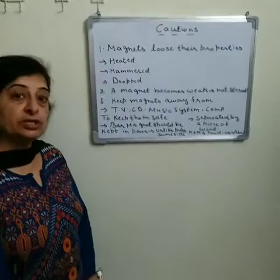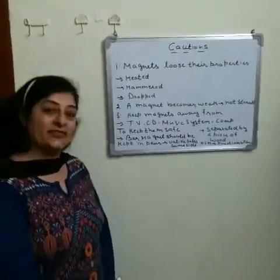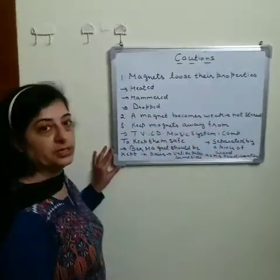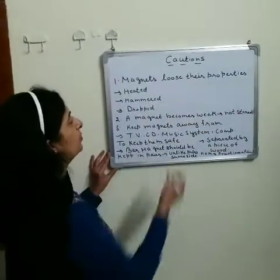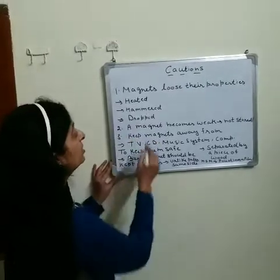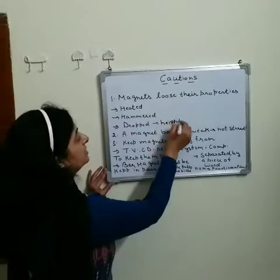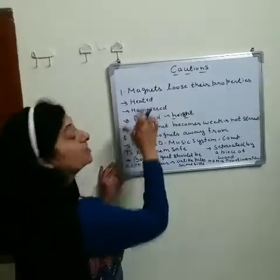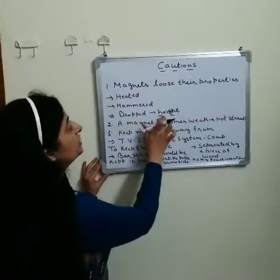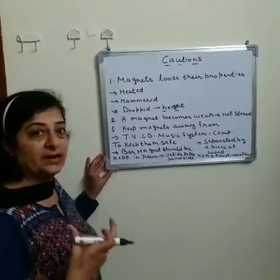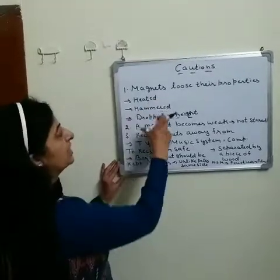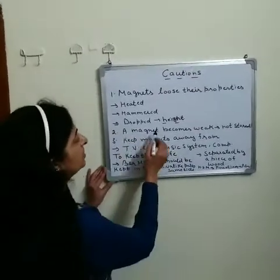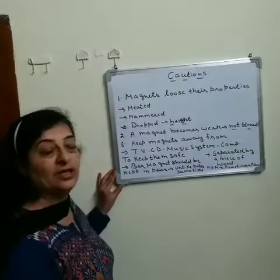Now we will discuss precautions to keep our magnets safe. First, let us find out the reasons due to which magnets lose their properties. A magnet loses its properties if it is heated, hammered, or dropped from a height. Therefore, a magnet should not be heated, hammered, or dropped. A magnet also becomes weak — meaning it loses its attraction power — if it is not stored properly.